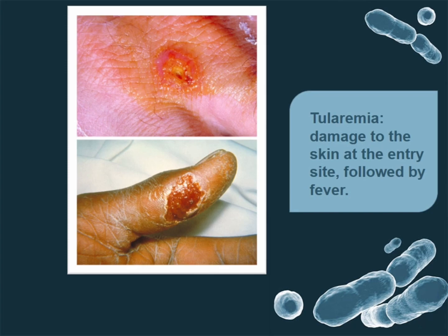Francisella tularensis is the causative agent of tularemia, and sometimes also results in pneumonia. Tularemia can be commonly seen in rabbits and rodents, and it causes ulceration in the skin, just like the one we are seeing in the picture.